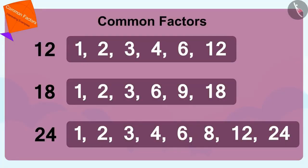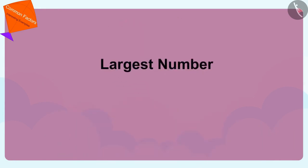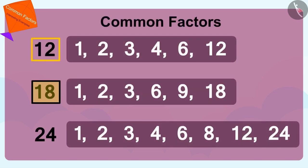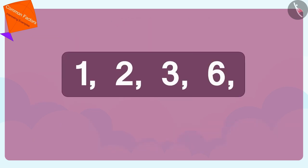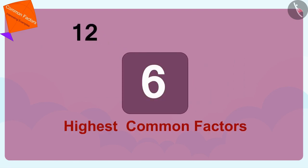Children, out of the common factors of numbers, the largest number is called the highest common factor. Out of all the common factors of 12, 18 and 24, 6 is the largest. Therefore, we can say that 6 is the highest common factor of 12, 18 and 24.